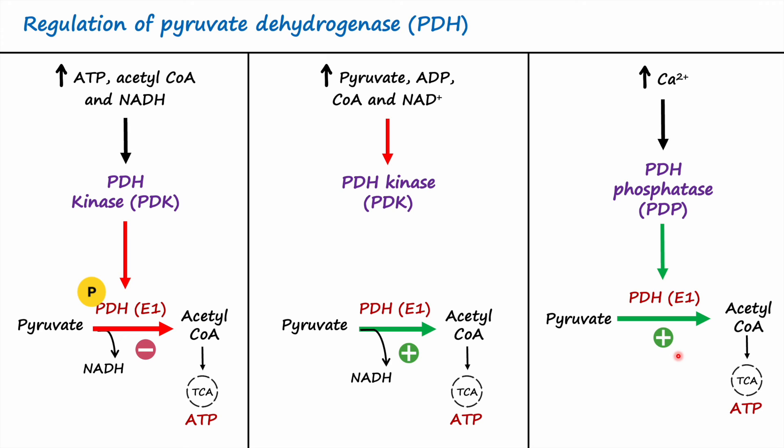The reason calcium activates this reaction is important: when skeletal and cardiac muscle cells contract, they release calcium. Cardiac muscle cells constantly contract and therefore constantly require energy in the form of ATP. The role of calcium here is to ensure these cells are provided with energy and function without interruption. This is the overview of regulation of pyruvate dehydrogenase enzyme.